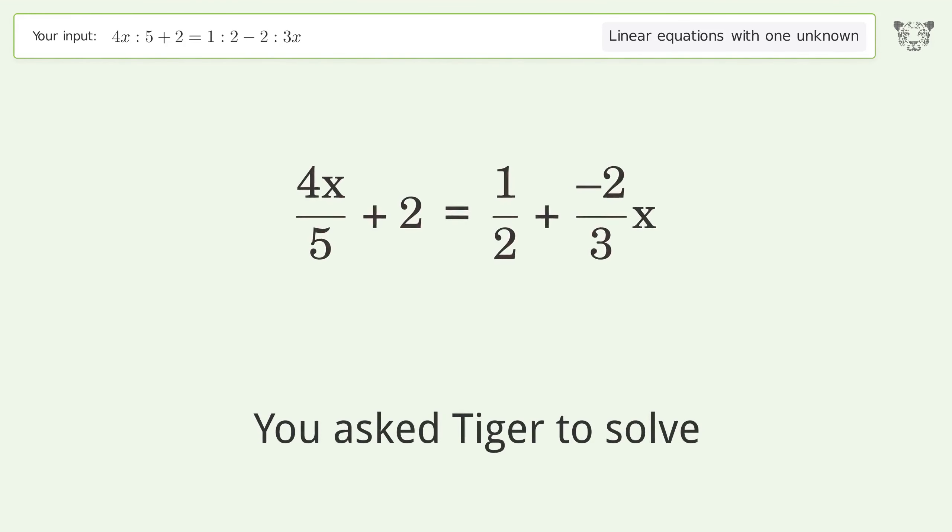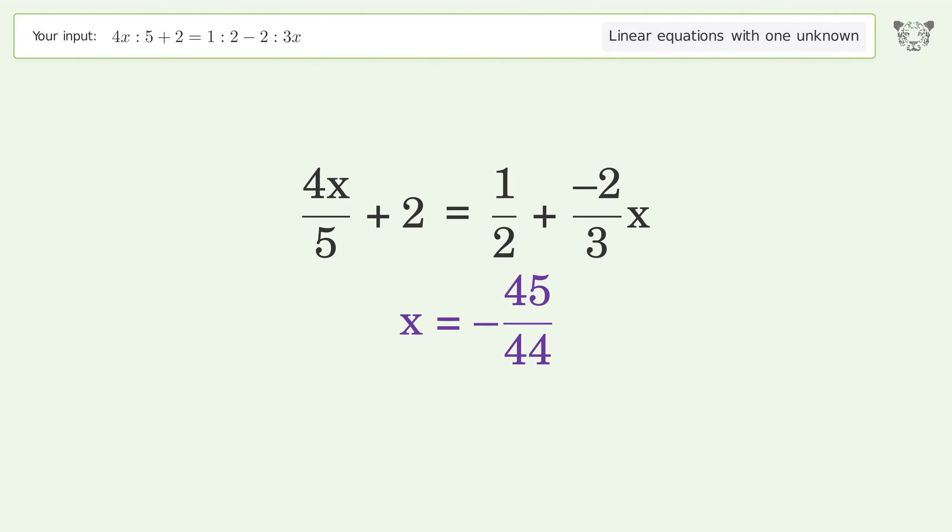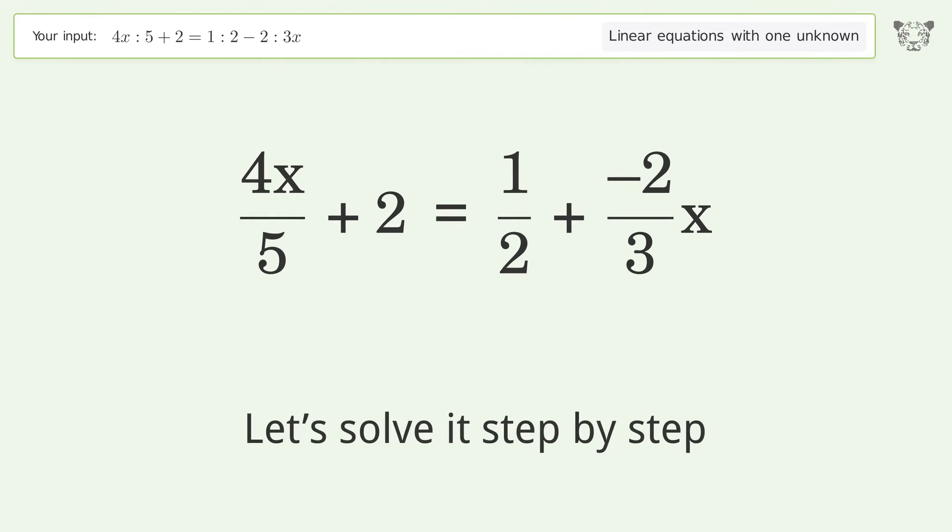You asked Tiger to solve this linear equation with one unknown. The final result is x equals negative 45 over 44. Let's solve it step by step.